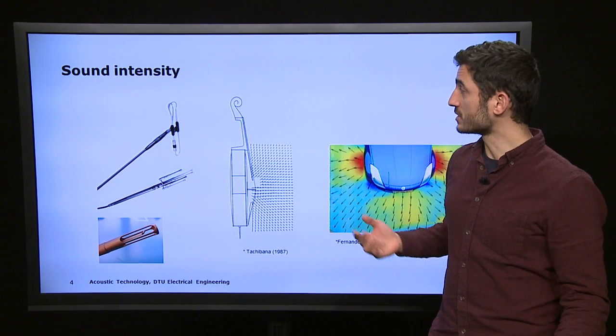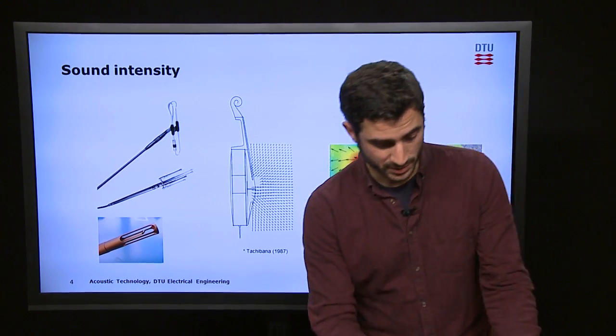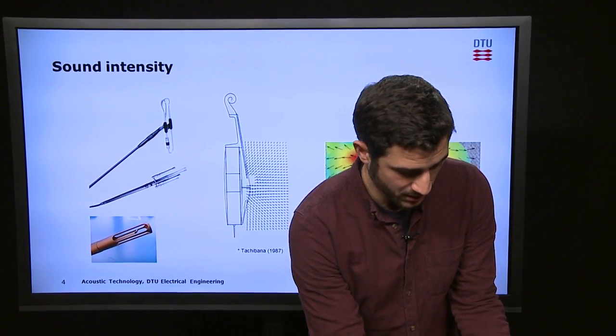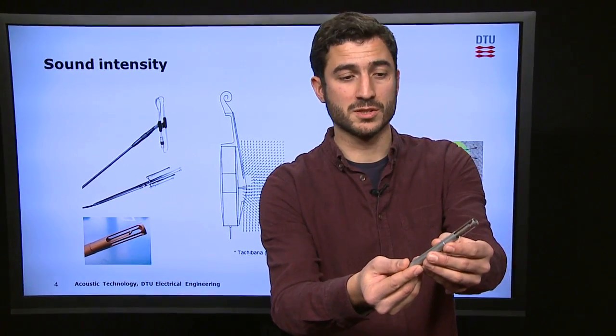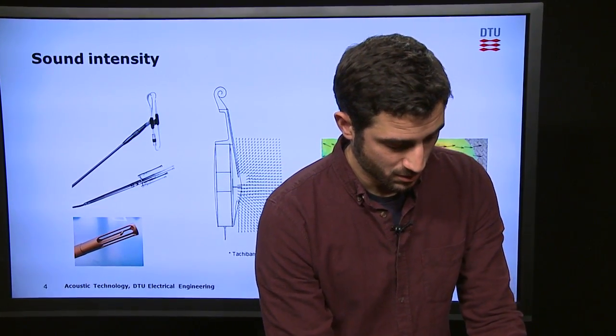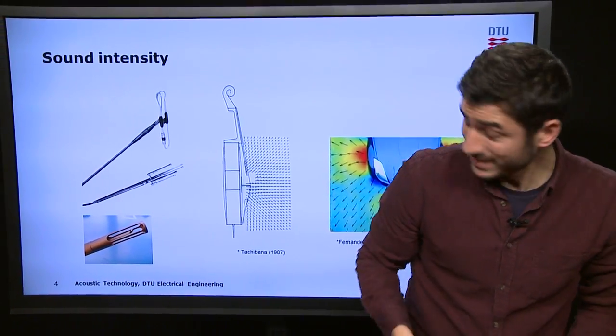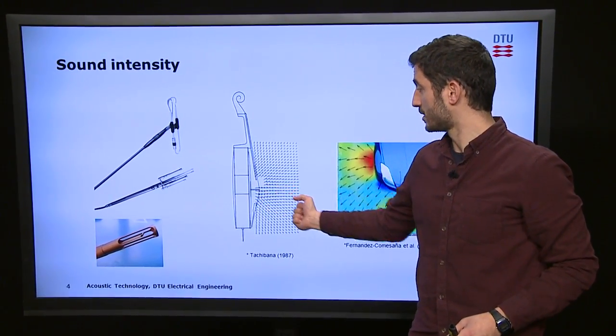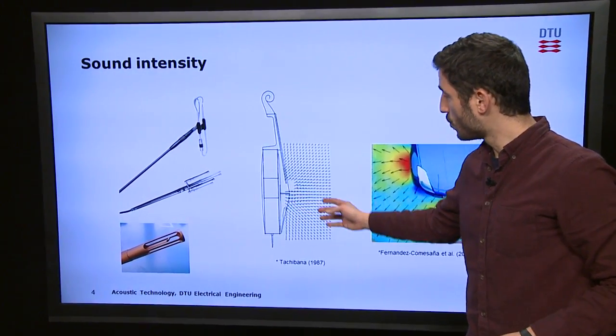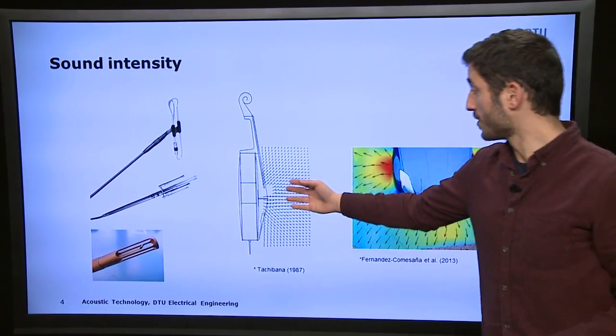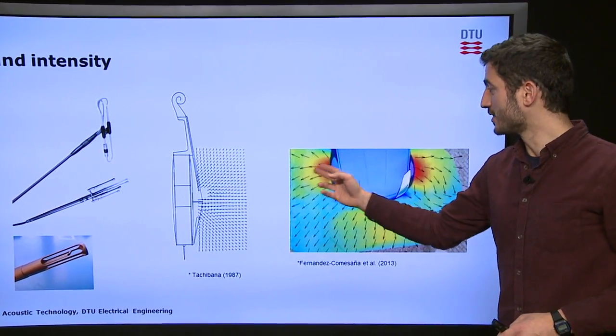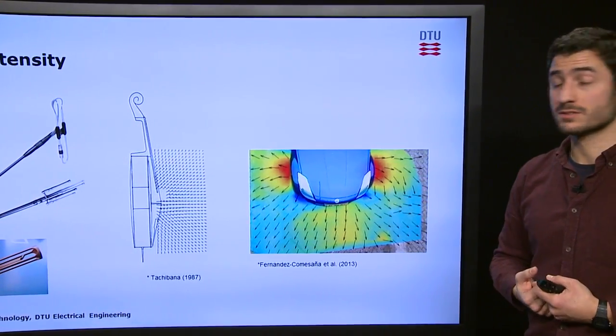Let us consider for instance sound intensity measurement. And I brought a couple of probes here, like this one based on velocity measurements, or this one based on sound pressure measurements, that make it possible to measure the sound intensity and visualize the flow of acoustic energy away from a source and identify the regions that are radiating strongly.